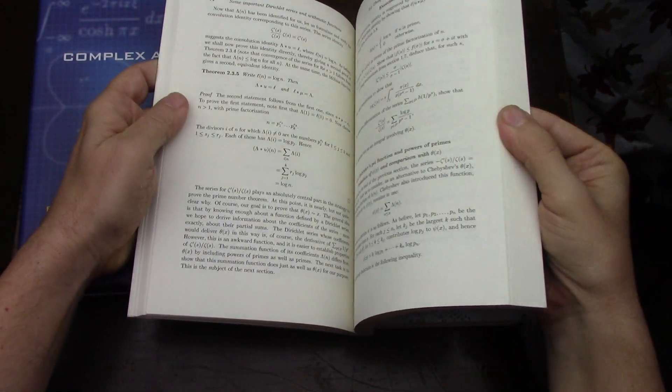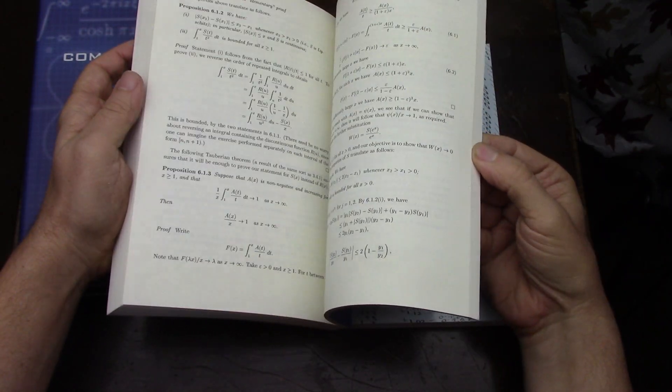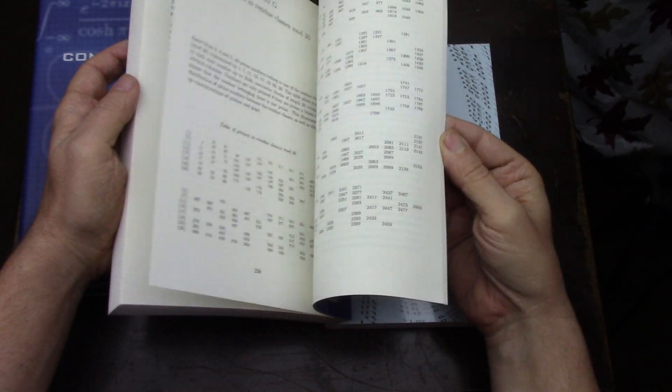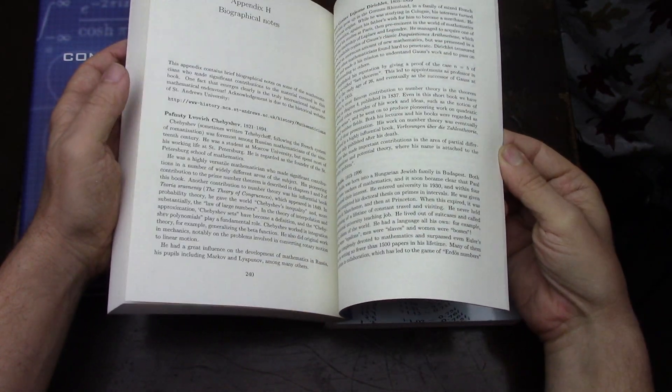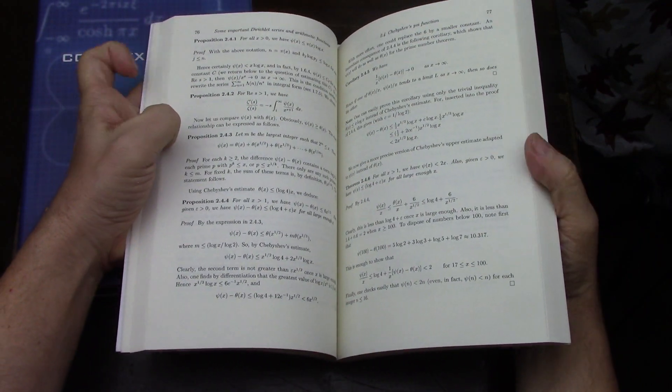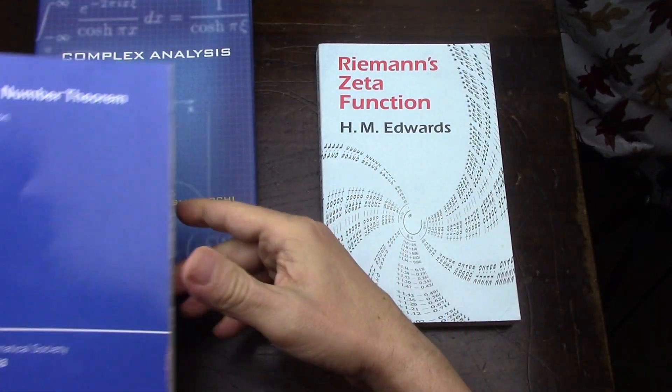It's got some exercises. I don't think it's got answers in the back, I'm pretty sure it does not. It does not. It's got appendices. Primes. So I would couple reading this Princeton's lectures complex analysis book with something about the prime number theorem.